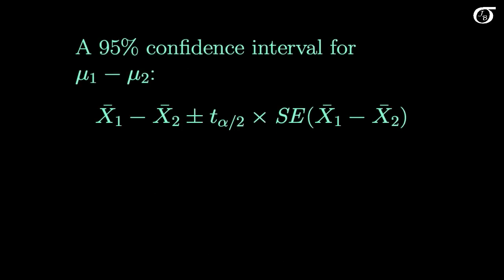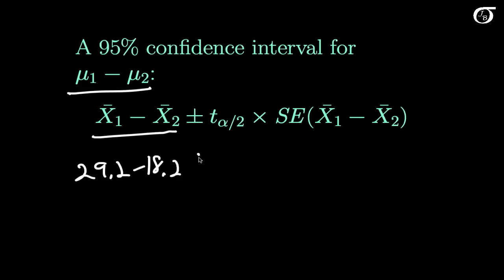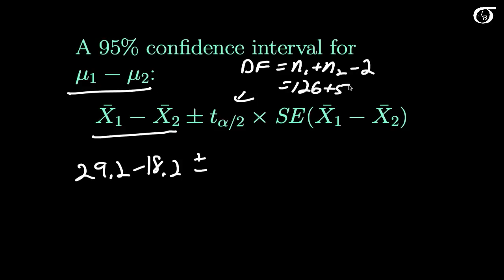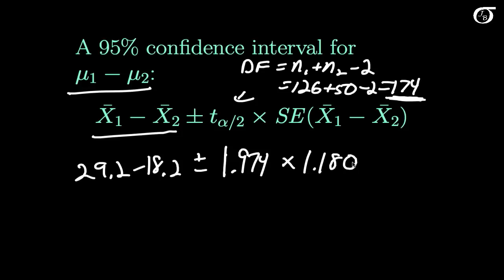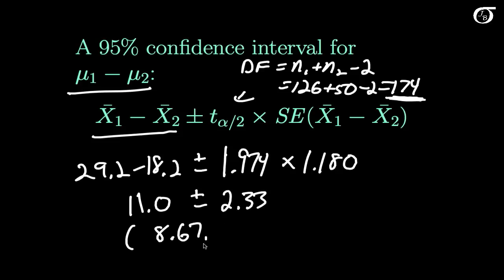Now the calculations are straightforward. For a 95% confidence interval for the difference in population means, we take the difference in sample means: 29.2 minus 18.2. We add and subtract the appropriate t value. Our degrees of freedom are n1 plus n2 minus 2, which is 126 plus 50 minus 2, or 174. Using a t table or computer gives t equals 1.974. Multiplying by our standard error gives 11.0 plus or minus 2.33, or an interval of 8.67 to 13.33.